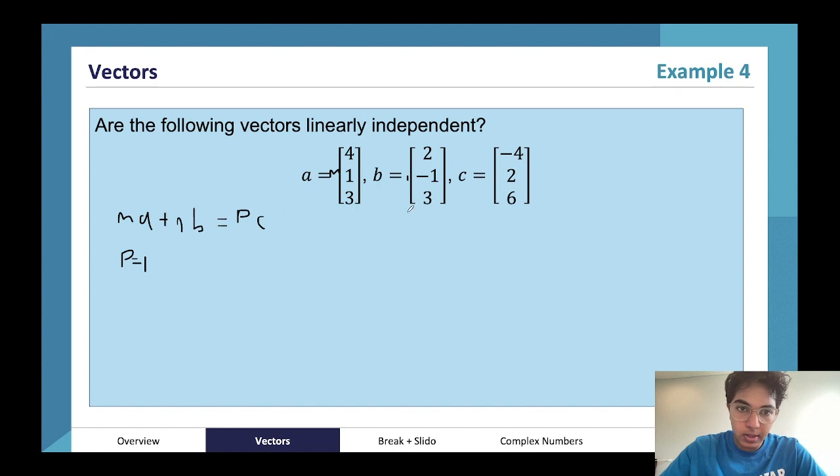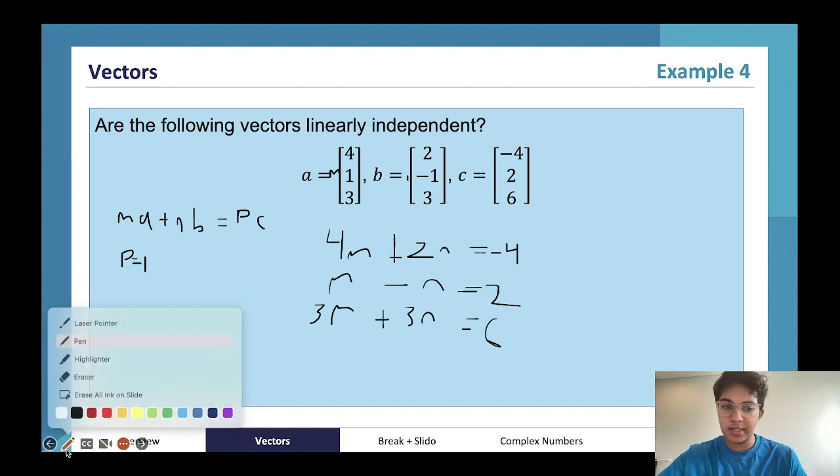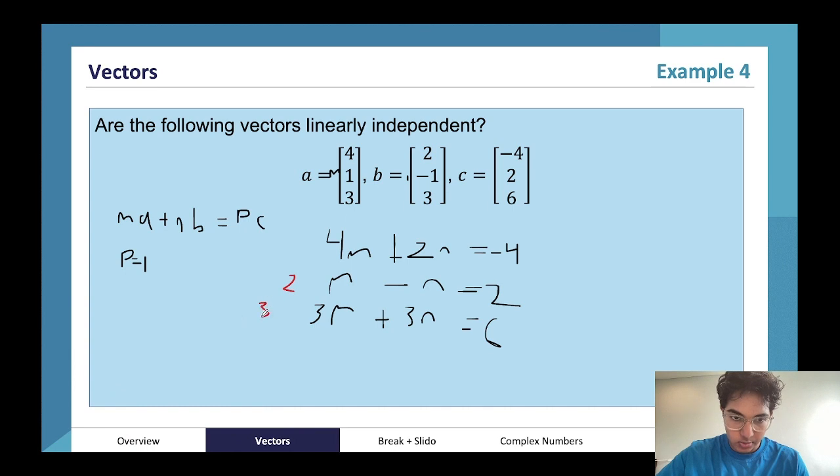So we'll get 4m plus 2n is equal to negative 4. 3m plus 3n is equal to 6. So we have three equations, two variables. We can choose any two equations and fiddle around with that to see if we get our answer. I'm going to choose the last two equations because they look a little bit similar.